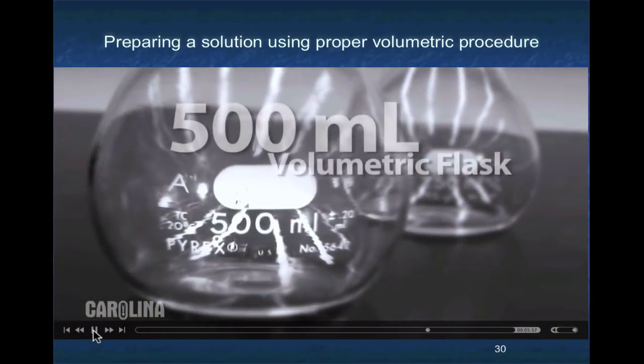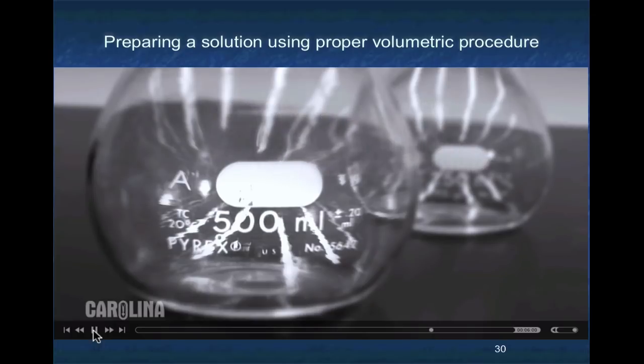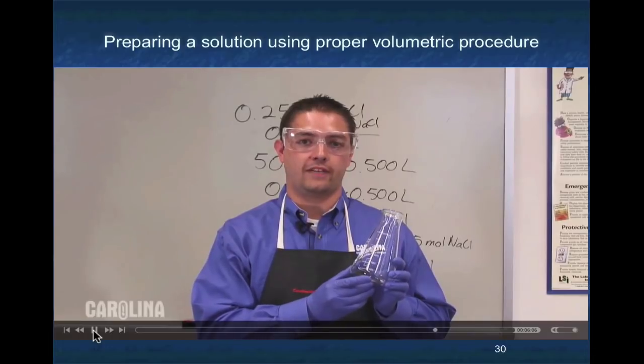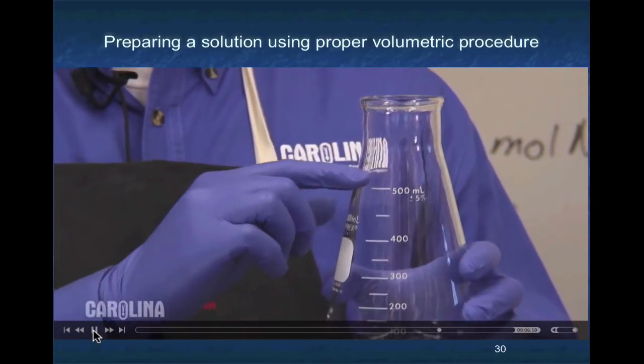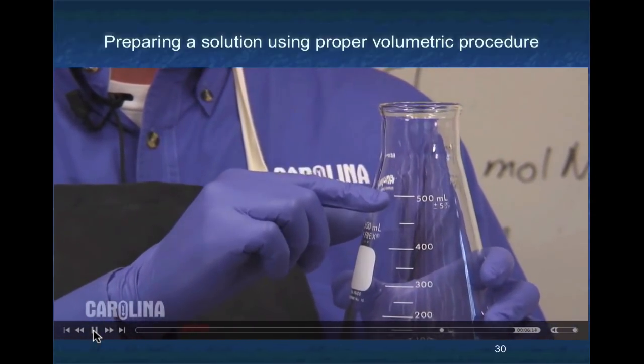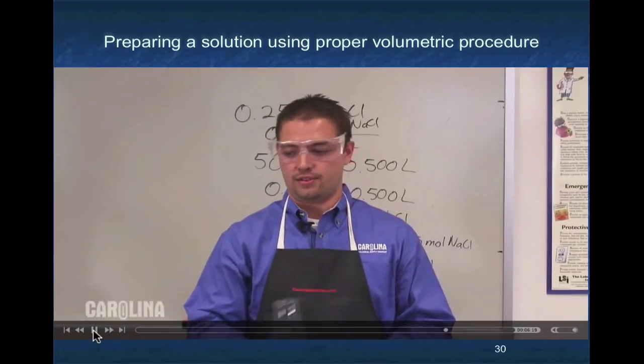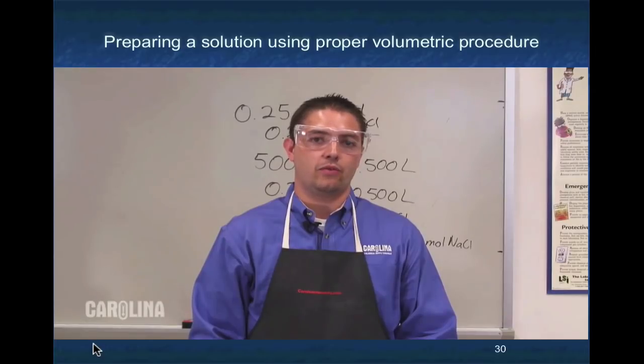The error on a volumetric flask is much lower than any other type of glassware of similar volume. For example, the volume markings on a beaker or an Erlenmeyer flask are only accurate to plus or minus 5%, meaning if the meniscus were on the 500 milliliter line, it could be anywhere between 475 milliliters and 525 milliliters. On the other hand, using a volumetric flask, we know that the volume is exactly somewhere between 499.8 milliliters and 500.2 milliliters, meaning it's much more accurate.